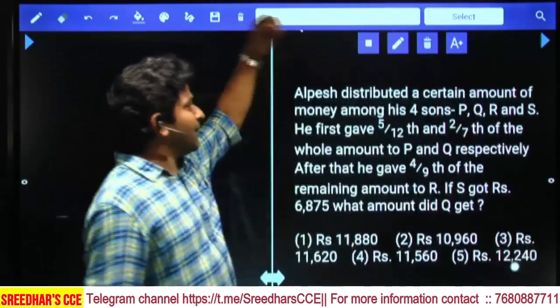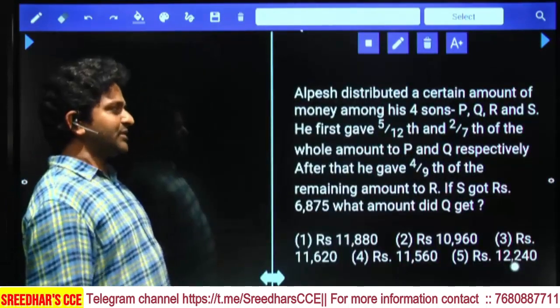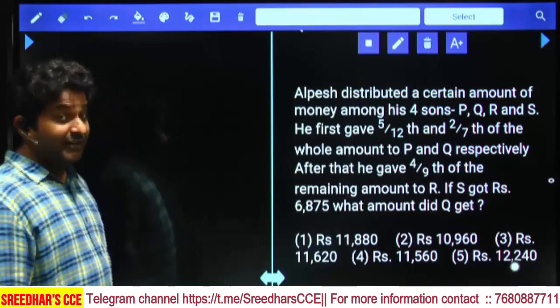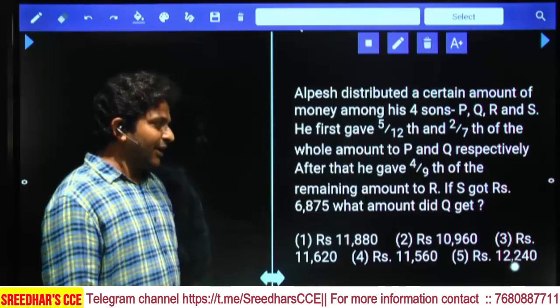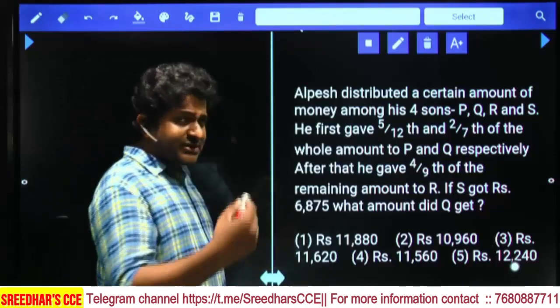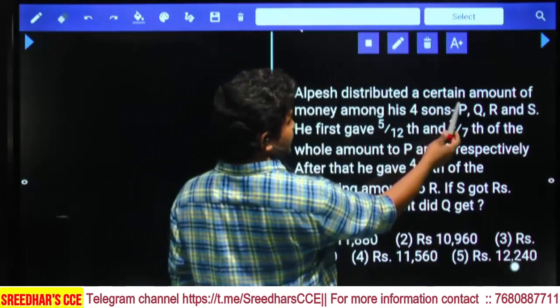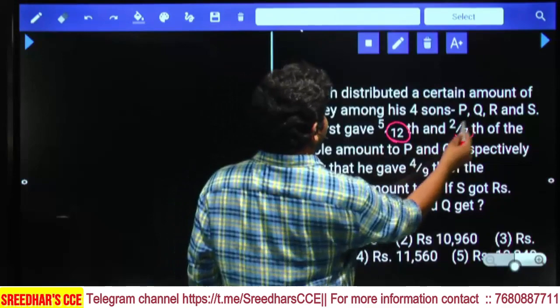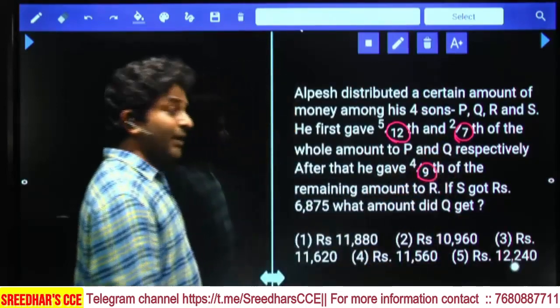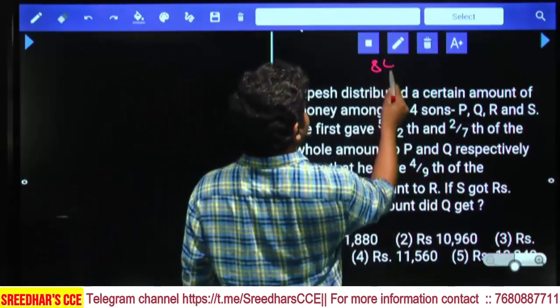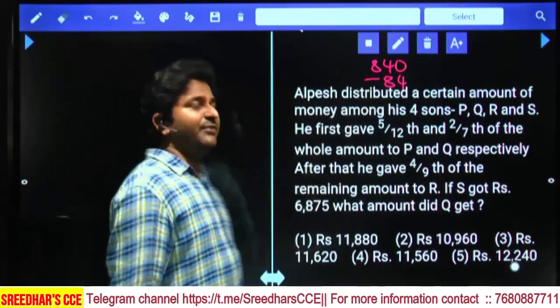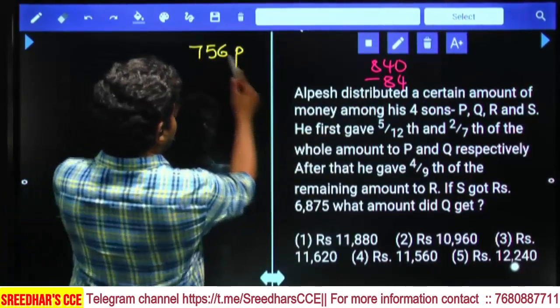A father distributed a certain amount among his four sons P, Q, R, S. He first gave 5/12 and 2/7 of the whole amount to P and Q respectively. After that he gave 4/9 of the remaining money to R. If S got 6875, what amount did Q get? I'll start with the total sum as LCM of denominators: 12 times 7 is 84, times 9 is 756 parts.